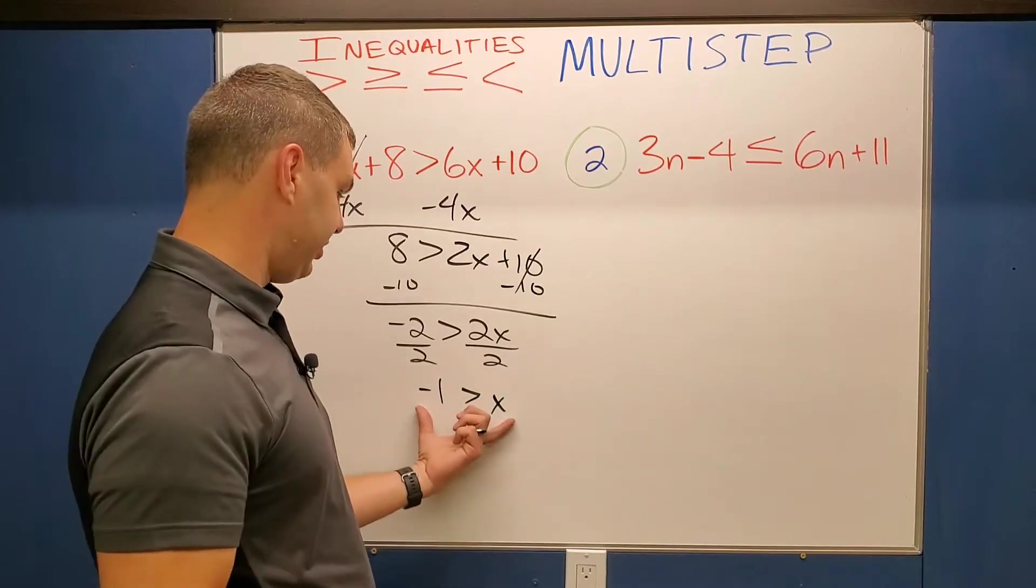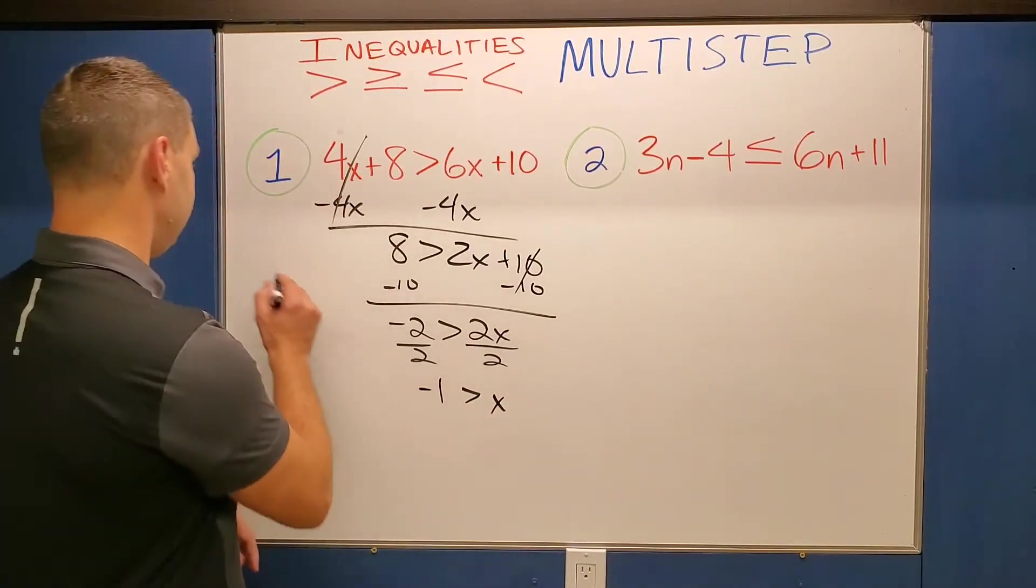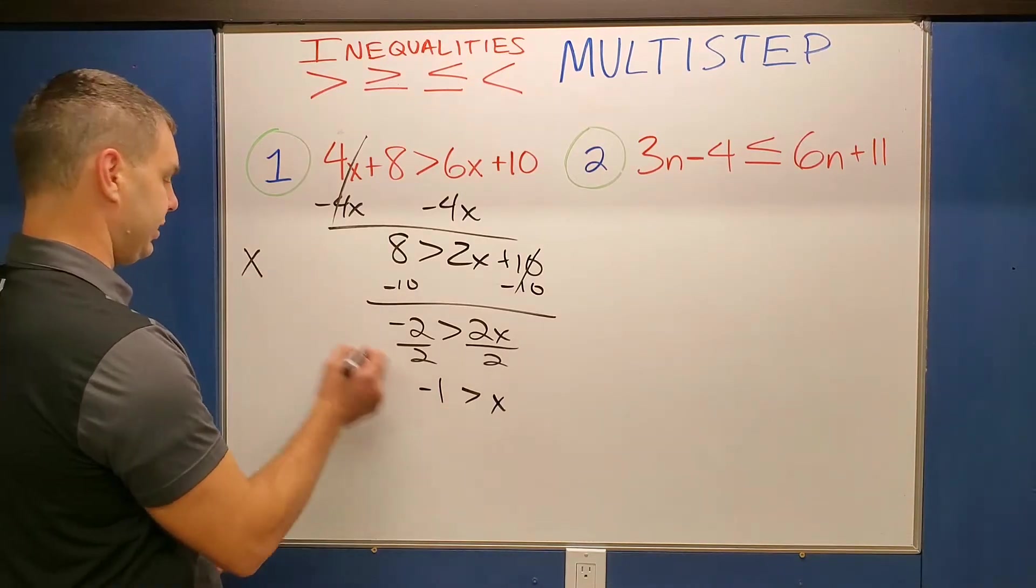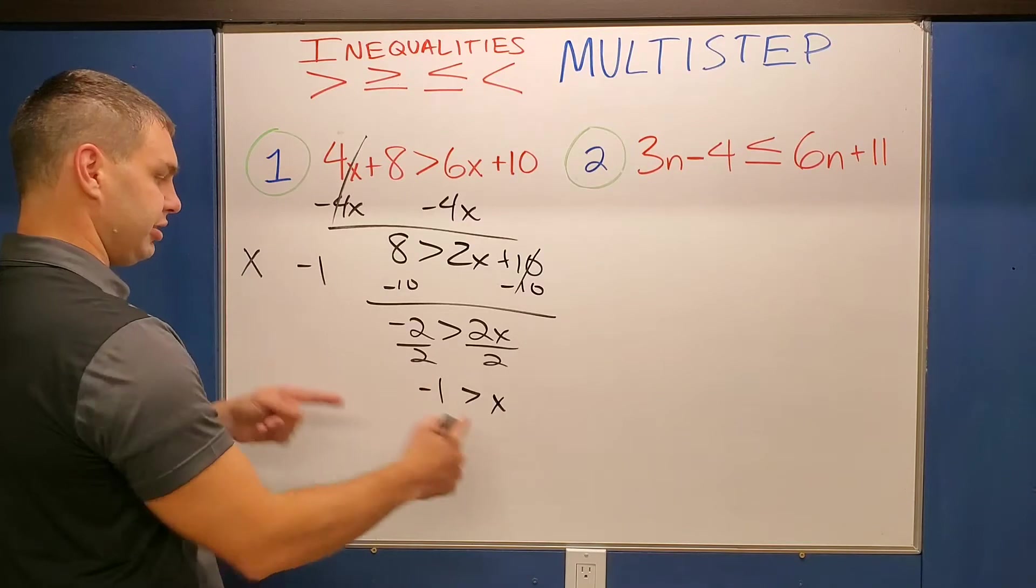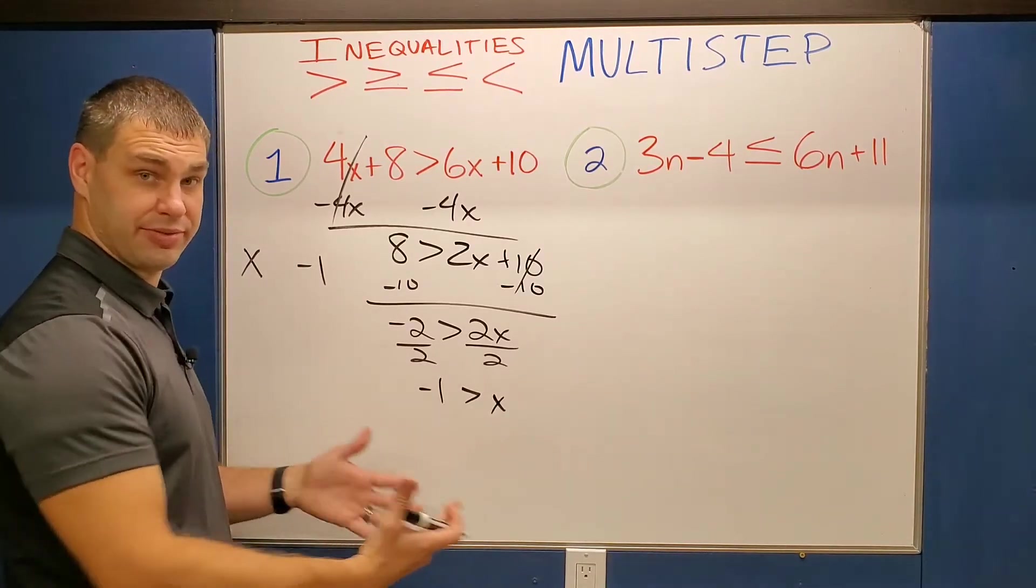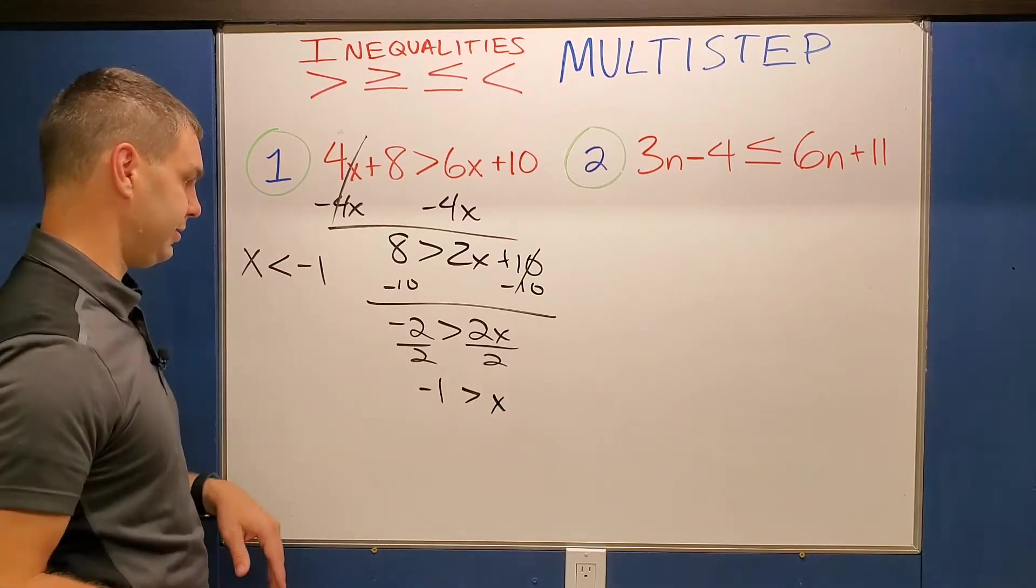And then the second thing is, this is not written probably how you want to see it. You want to write this so the variable is first. So if I want to do that, I'll come over here and say x and then my negative 1. Here it's pointed at the x. So if you want to write your x first, just keep it pointed whichever way it is. If it's open to the x or pointed at the x, here it's pointed to the x. So I'm gonna keep mine pointed like this.